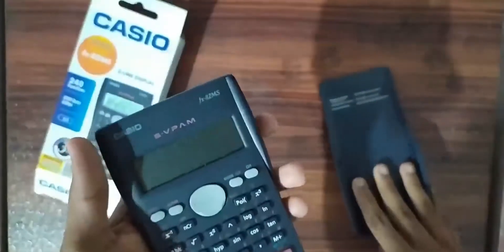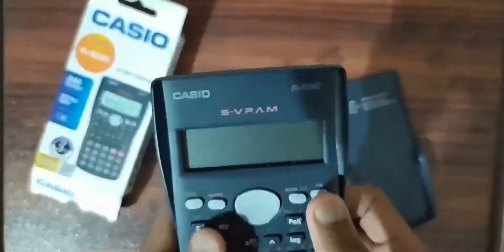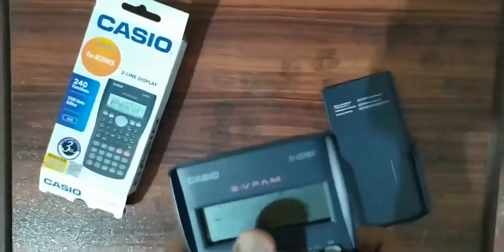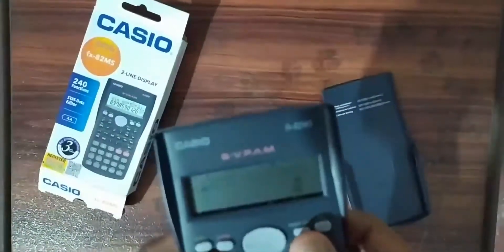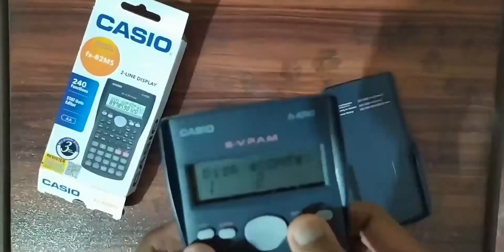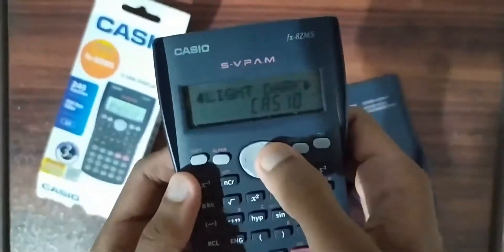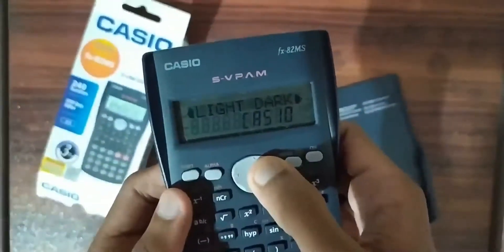Now let's unbox the calculator itself. It comes with a hard case. Now let's turn it on. It's written SVPAM on the top. It has a function to adjust contrast.